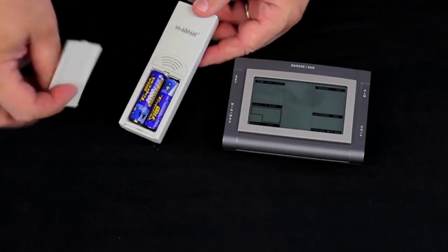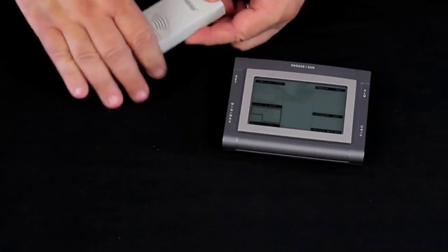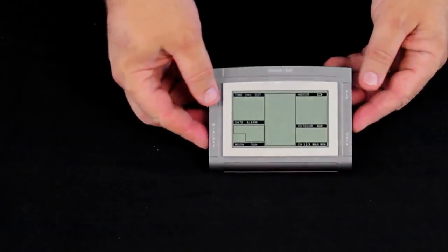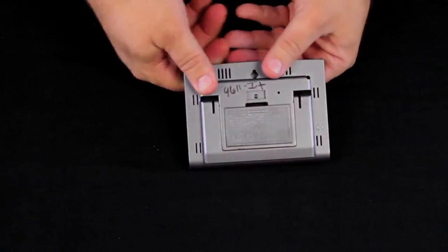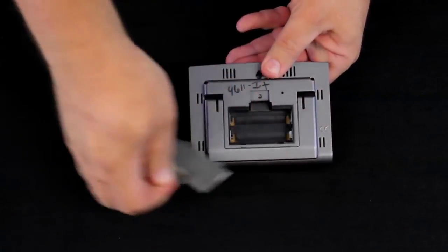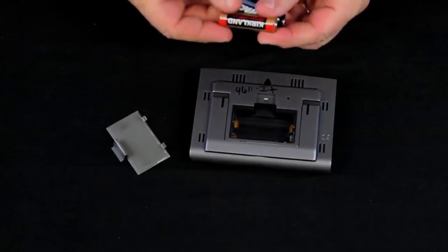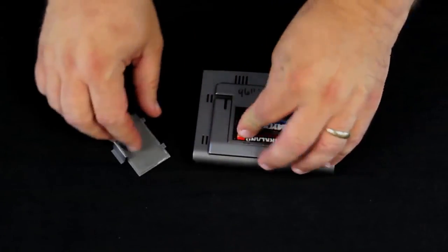Once we have the batteries in the sensor we're just going to move that off about three to five feet for the initial setup and now we'll put the batteries into the weather station itself. To open them we just push down on the tab and it flips forward and we're using alkaline batteries as we do in all of our units.